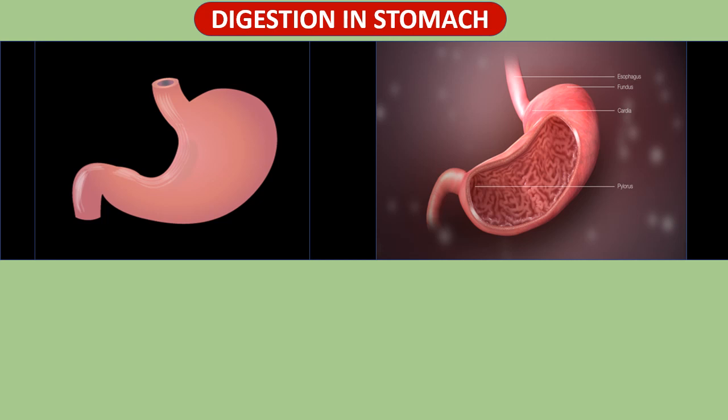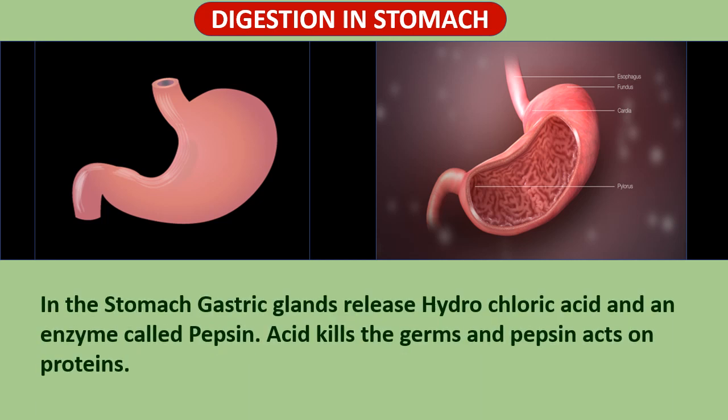The stomach is a large organ which expands when food enters into it. The muscular walls of the stomach help in mixing the food thoroughly with more digestive juices. Hydrochloric acid facilitates the action of enzyme pepsin and also kills the germs present in the food. Food in the form of a soft slimy substance, where some proteins and carbohydrates have already been broken down, is called chyme. The food then passes from the stomach to the small intestine through ring-like muscles called pyloric sphincters, which regulate the passage so that only small quantities of food enter the small intestine at a time.